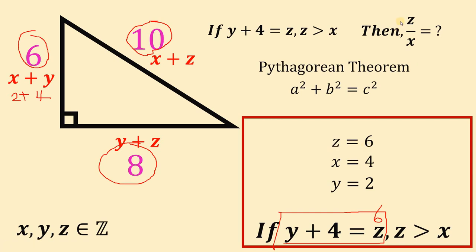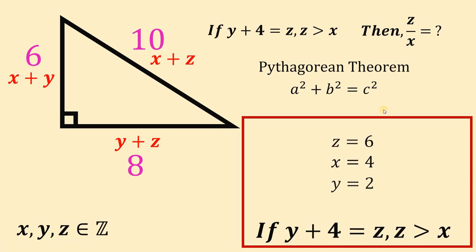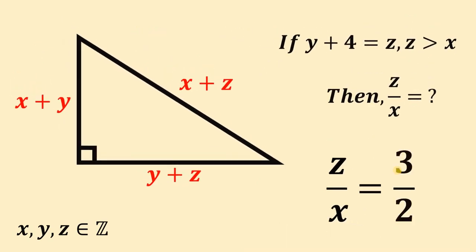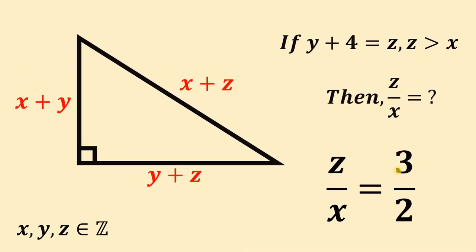We want the ratio of z to x, which is 6 over 4. Simplifying, we get 3 over 2. This is the only solution to this question, and we are done.